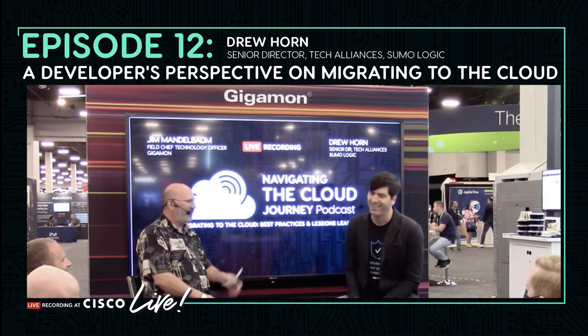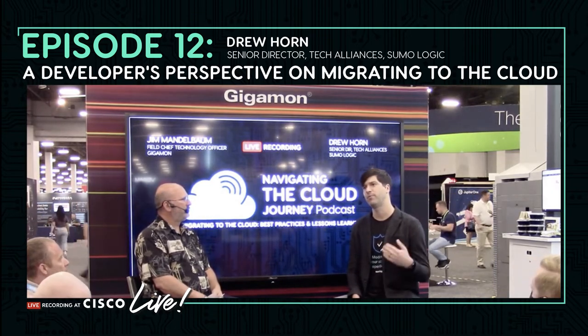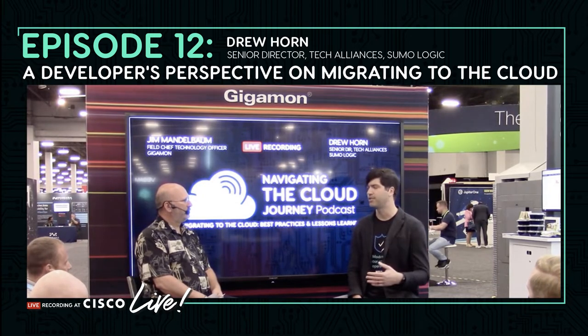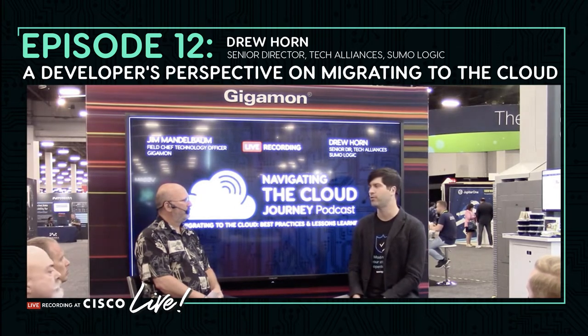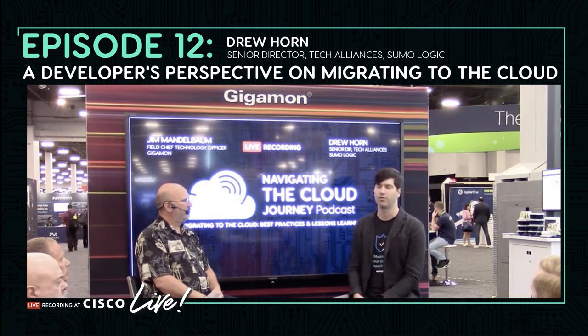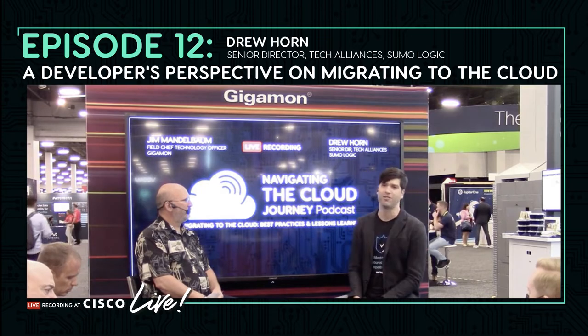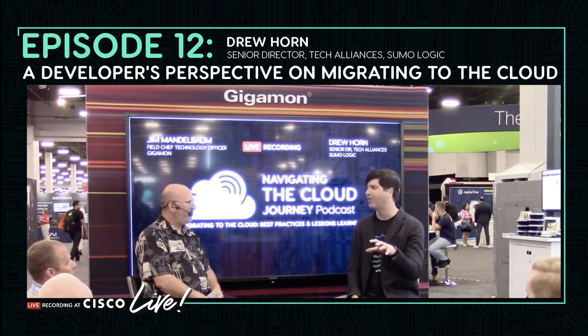Acronym hell — what is DORA? DORA is DevOps Research and Assessment, an organization that spent about seven years conducting surveys of DevOps engineers and developers globally. Through applied data science, they identified the key performance indicators you should track as part of moving to the cloud or increasing software delivery performance. They wrote a book called Accelerate, by Dr. Nicole Forsgren and her team — required reading at many organizations.